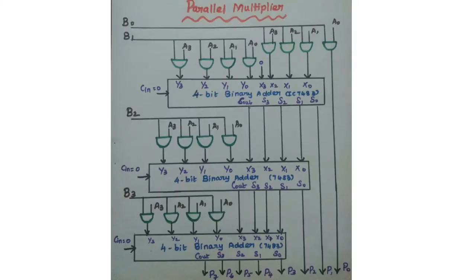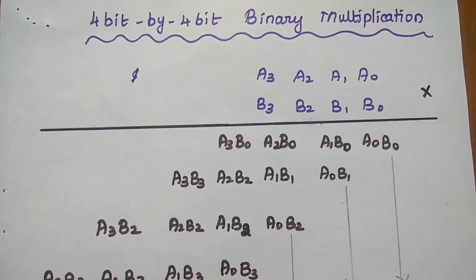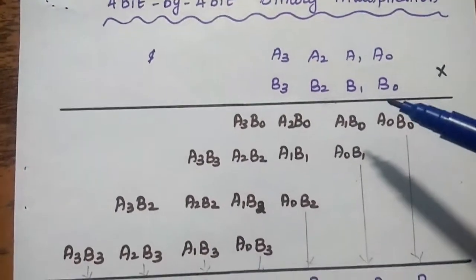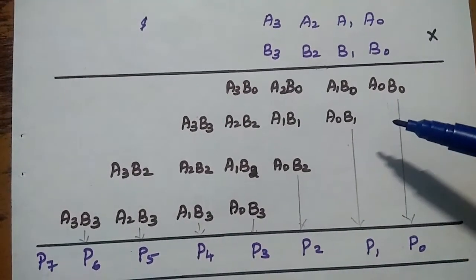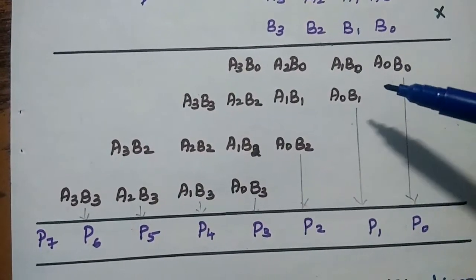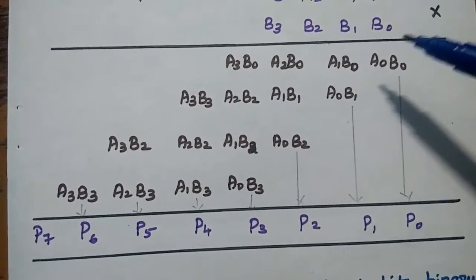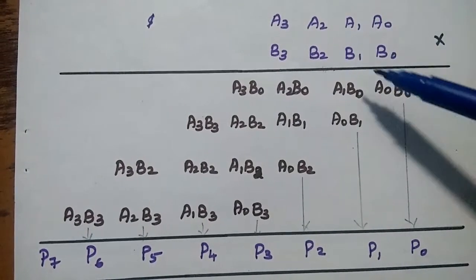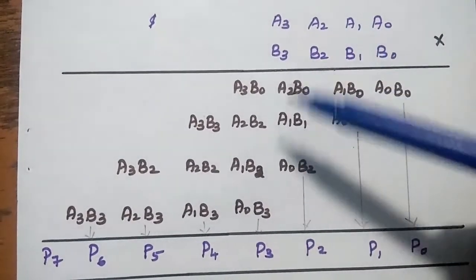The parallel multiplier requires 4-bit binary adders and 16 AND gates. The generation of partial products and their additions are performed in parallel — that is, simultaneously. For a 4-bit by 4-bit binary multiplication, we perform partial products B0×A0, B0×A1, B0×A2, and B0×A3.